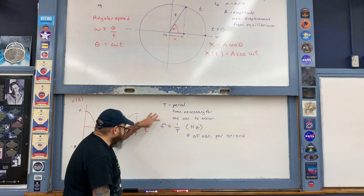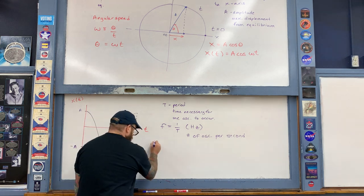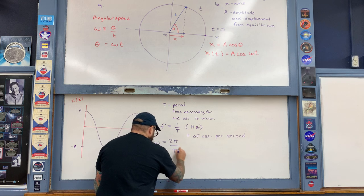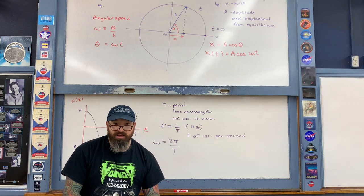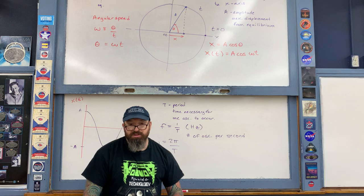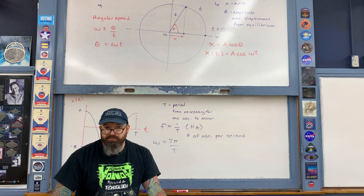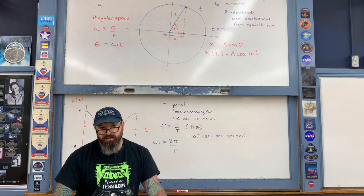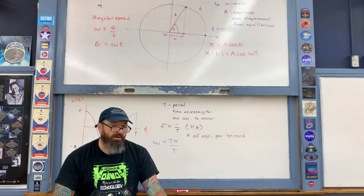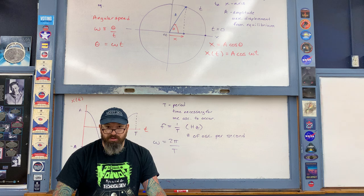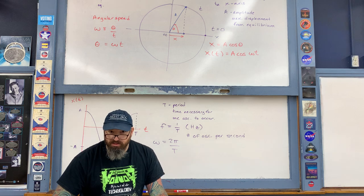The period and frequency are related to angular speed ω through the expression ω = 2π/T — you go through 2π radians per one period. At this point, we no longer refer to ω as the angular speed, since that term corresponds to uniform circular motion. Instead, for simple harmonic motion, we rename it the angular frequency.